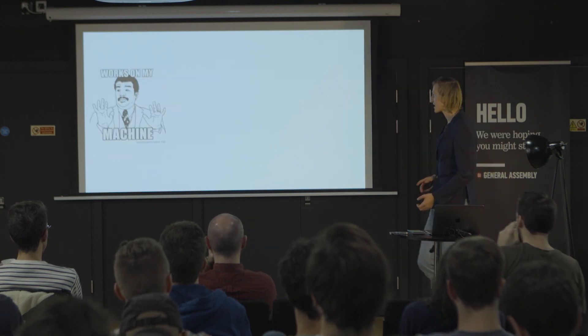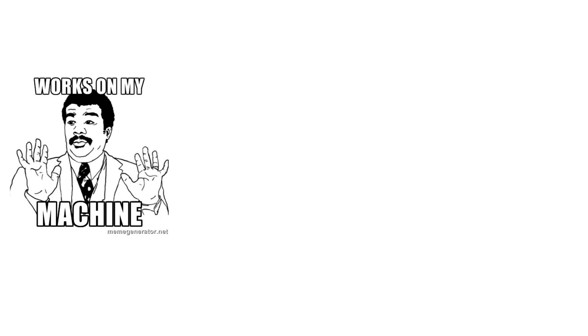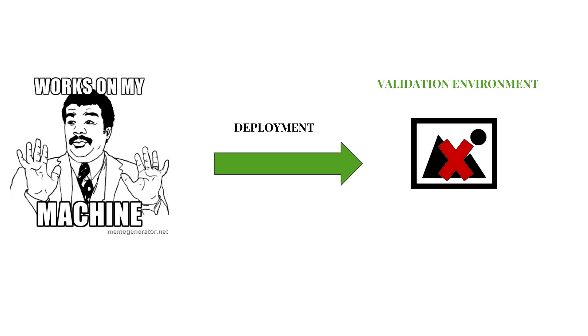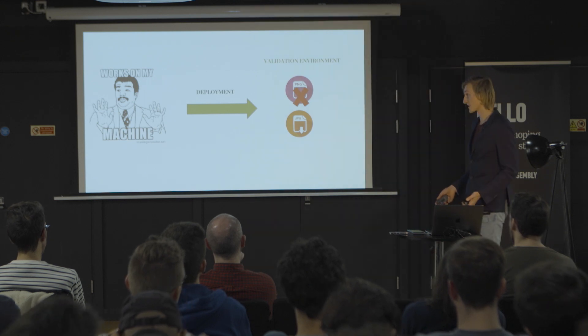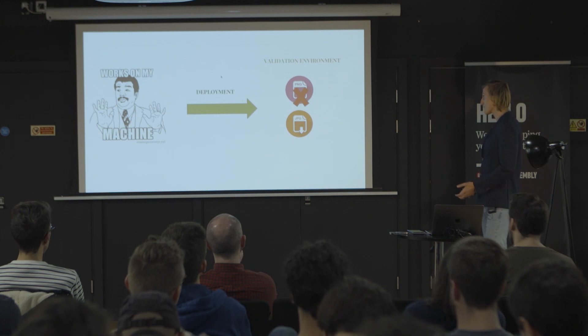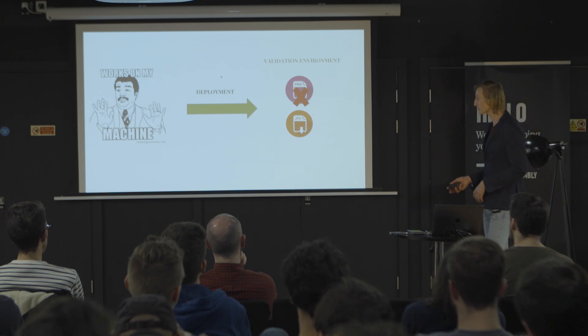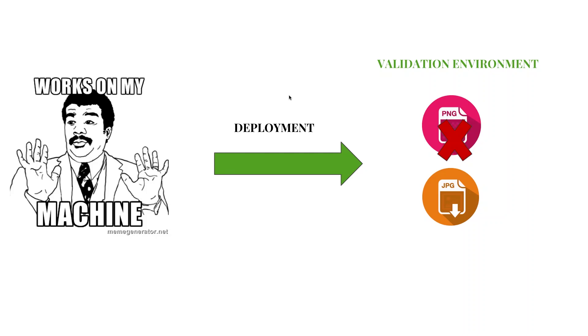Here's a real example from one month ago. I was able to generate my PDF on my machine and was really happy. But when I deployed to the validation environment, the images weren't displayed at all, because there was a PNG library missing in my environment. I just converted all my images to JPEG and it was fine. It wasn't a big issue, but you don't want this kind of problem happening in production.